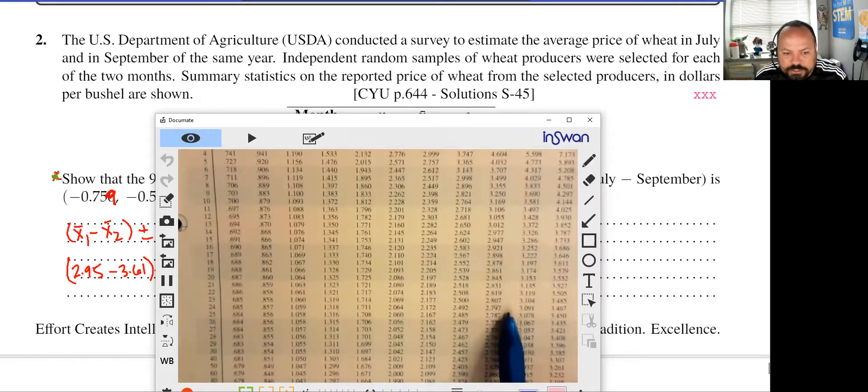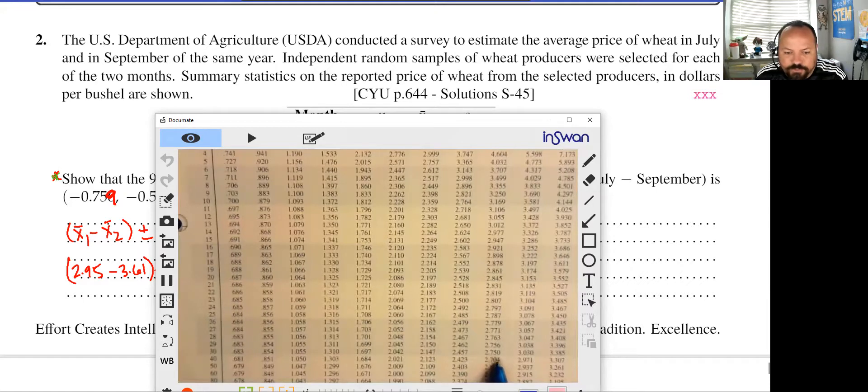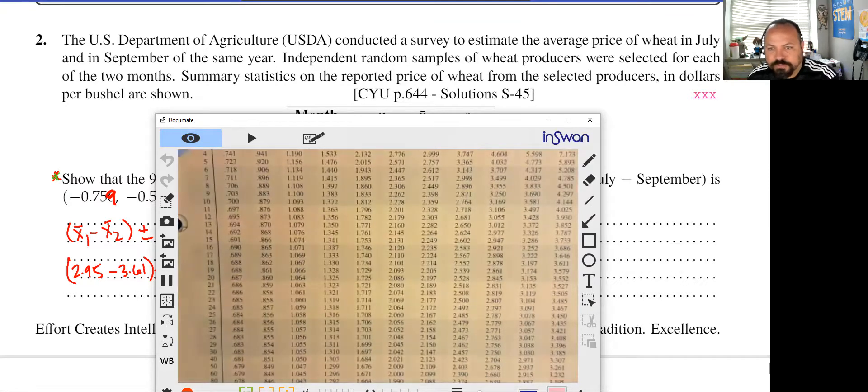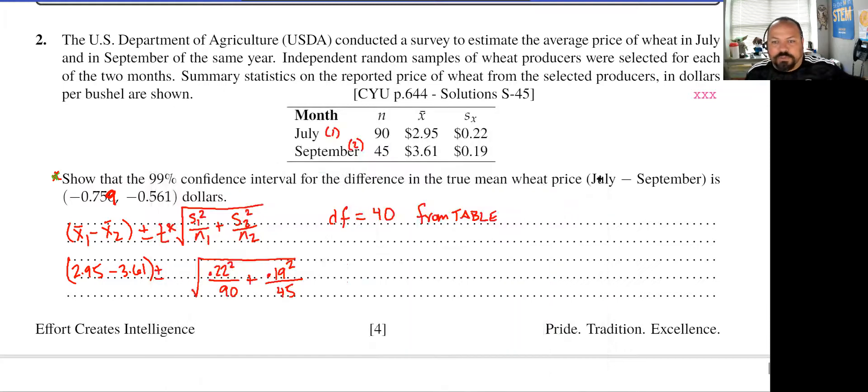And I see that I'm going to need to use 2.704 at 40 degrees of freedom or 2.678 at 50 degrees of freedom. I don't have 50 degrees of freedom, so I have to use 40, 2.704. So I write that information down. Degrees of freedom from the table, which means that my critical value was 2.704.